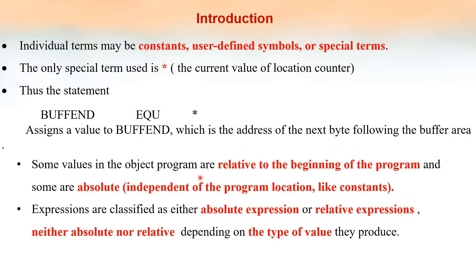Some values in the object program are relative to the beginning of the program, and some values do not depend on the starting address of the program. According to this, expressions are classified as: absolute expressions, which give a constant value; relative expressions, which depend on the starting location of the program; and neither absolute nor relative, which means it is not a proper expression — it is an error.